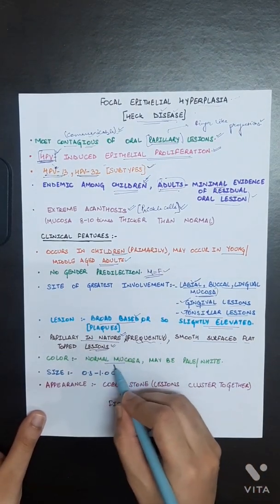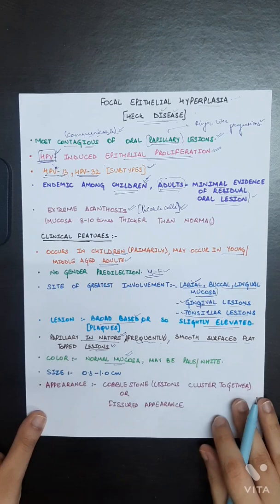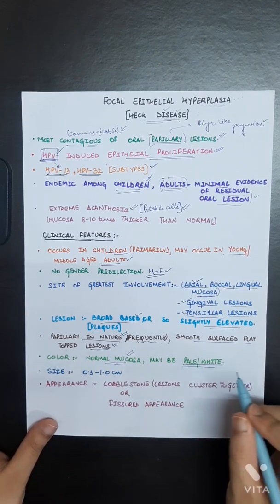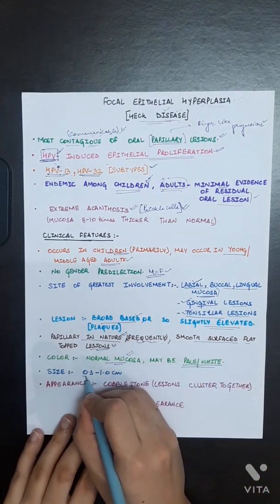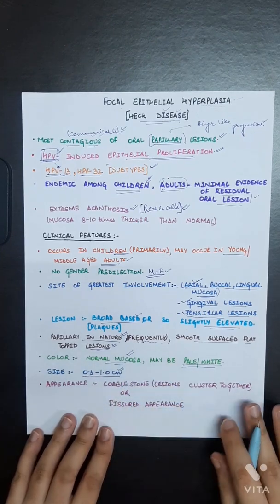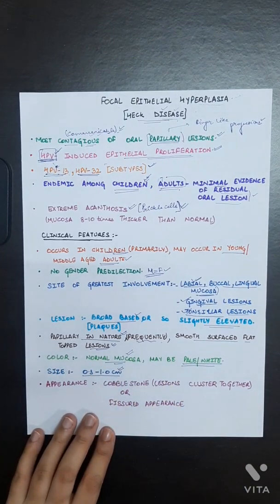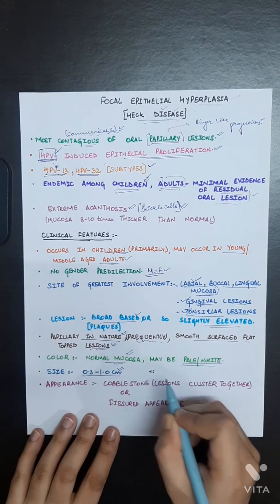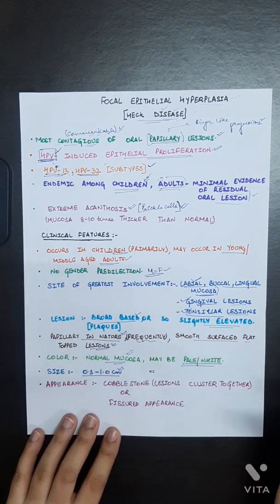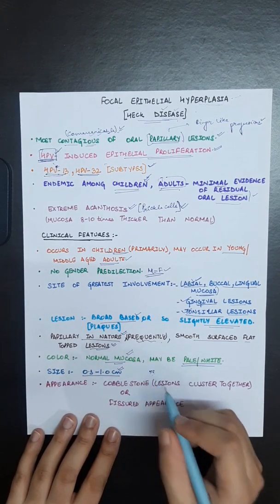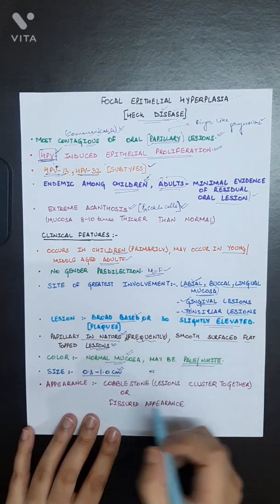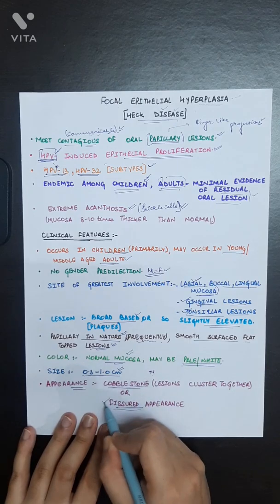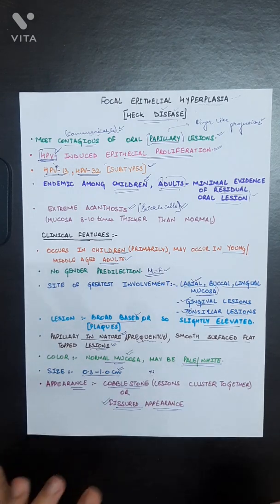Color is basically normal, similar to our normal mucosa, but it can be pale or white in some conditions. The size of the lesion is 0.3 to 1 centimeter. When a lot of lesions combine together, they cluster and form a bigger structure, a plaque maybe, giving the appearance of cobblestone or fissured appearance to the lesion.